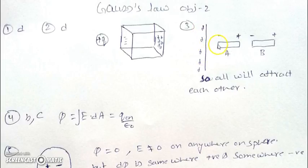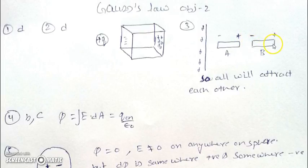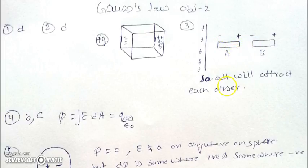We have assumed the sheet to be positive. So the nearby end of the rod will become negative and the other end will become positive. Similarly, because of the induction between these two, this end will be negative and this end will be positive. So all the objects - whether it's sheet M, rod A, rod B - they will all attract each other. So all options are correct.